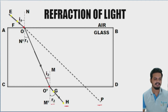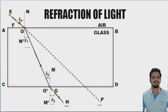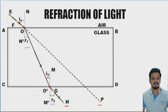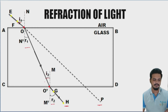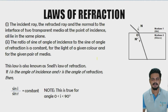Why are there two incidence and two refraction angles? Because light is traveling from one medium to another — that gives one incidence and one refraction. But then light also exits the glass into air, giving another incident ray and another refracted ray.